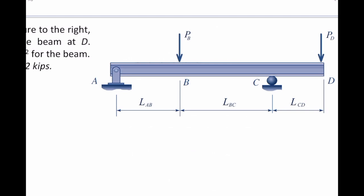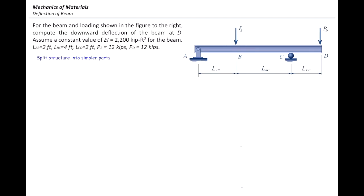In this problem we have load P acting on two points: at point B, which is on the simply supported part, and at point D, which is the cantilever part of this structure. To answer this problem we need to superpose the effect of the previous two problems, but let me start solving from the beginning.